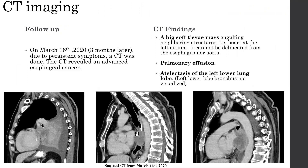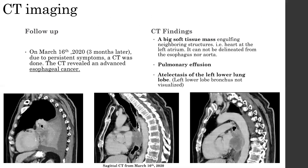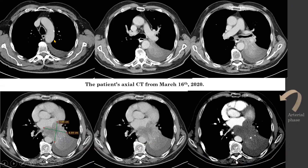The mass can be seen in relation to neighboring structures such as the aorta, the esophagus — which has contrast — and the trachea, as well as the heart. On axial CT slices, you can see the trachea, esophagus, and aorta, as well as the darkened density of pleural effusion.